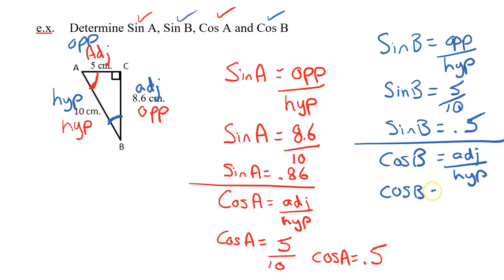Cos of B, adjacent now is 8.6 divided by 10, and finally cos of B, 8.6 divided by 10 is 0.86. Just like I had predicted.